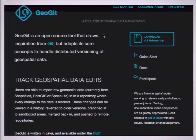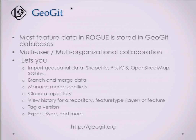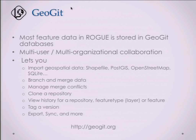In Rogue we store most of our data in GeoGit databases — some is still in PostGIS, and GeoServer lets you use a lot of different data sources, which we take advantage of. But the key for us was the multi-user, multi-organizational aspect, and the ability to actually sync repositories along with conflict resolution. That was really key.